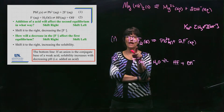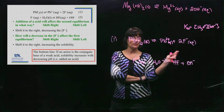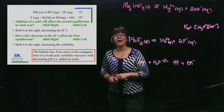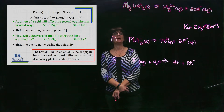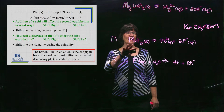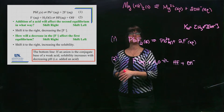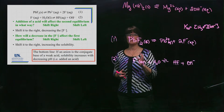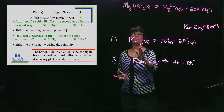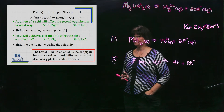Anytime you take an insoluble salt and add acid to it, you decrease OH⁻ and push the reaction to the right - if the anion is the conjugate base of a weak acid. We usually focus on anions because there's a wide variety of basic anions, while acidic cations are much less common.